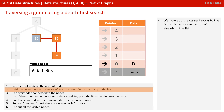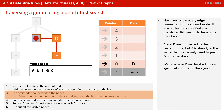We now add C to the list of visited nodes. We follow every edge connected to our current node C — A and D are connected, but A is already in the visited list, so it's just D we're going to push on. We now have D on the stack twice, but let's just trust the algorithm and carry on.